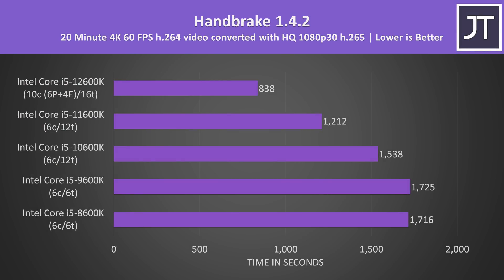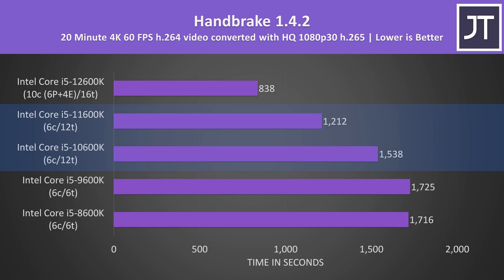Handbrake was used to convert a 4K 60 FPS video to 1080p. Interestingly the 9th gen i5-9600K was 9 seconds slower than the 8th gen i5-8600K, though in percentage terms it's within margin of error. 10th gen was only 12% faster than 9th gen here. The jump from 10th to 11th gen was actually larger at 27%, and 12th gen had a bigger 45% gain over 11th gen.